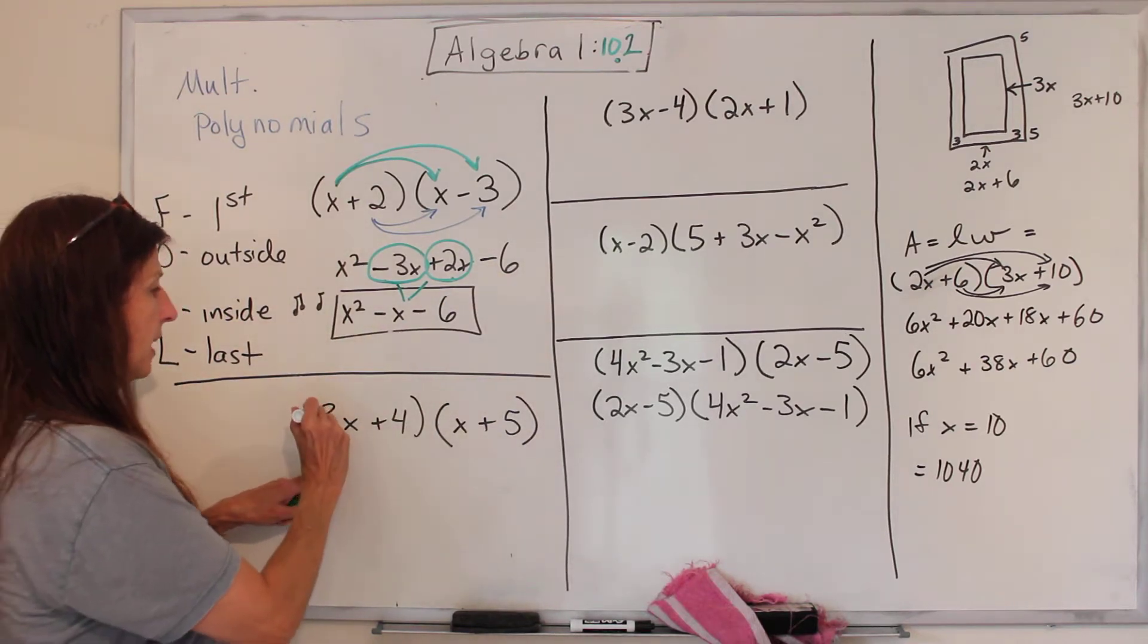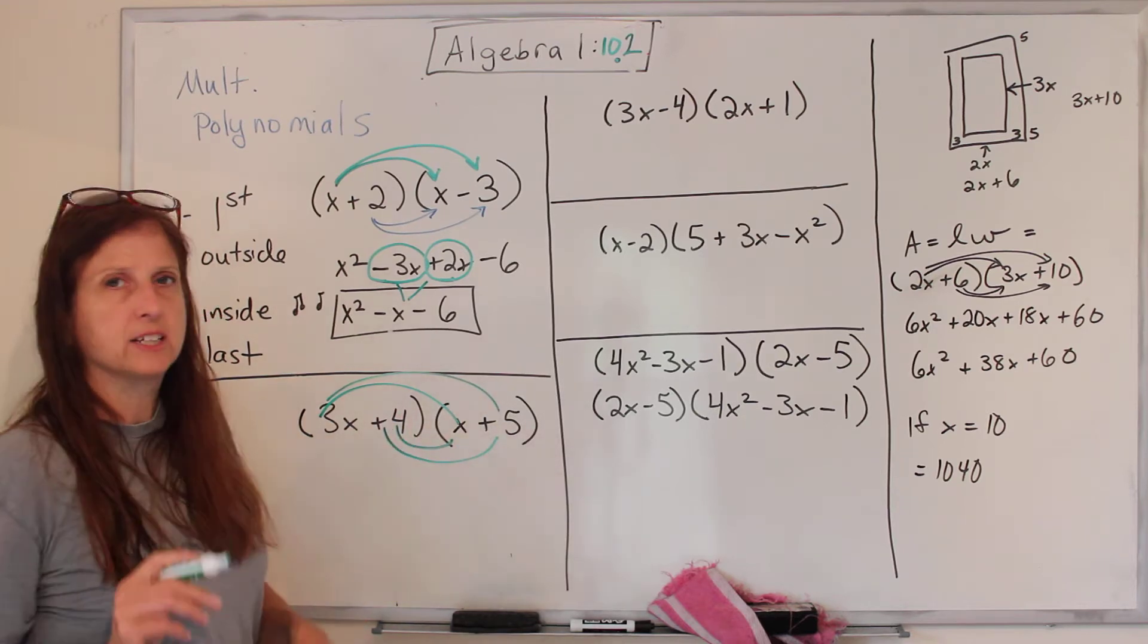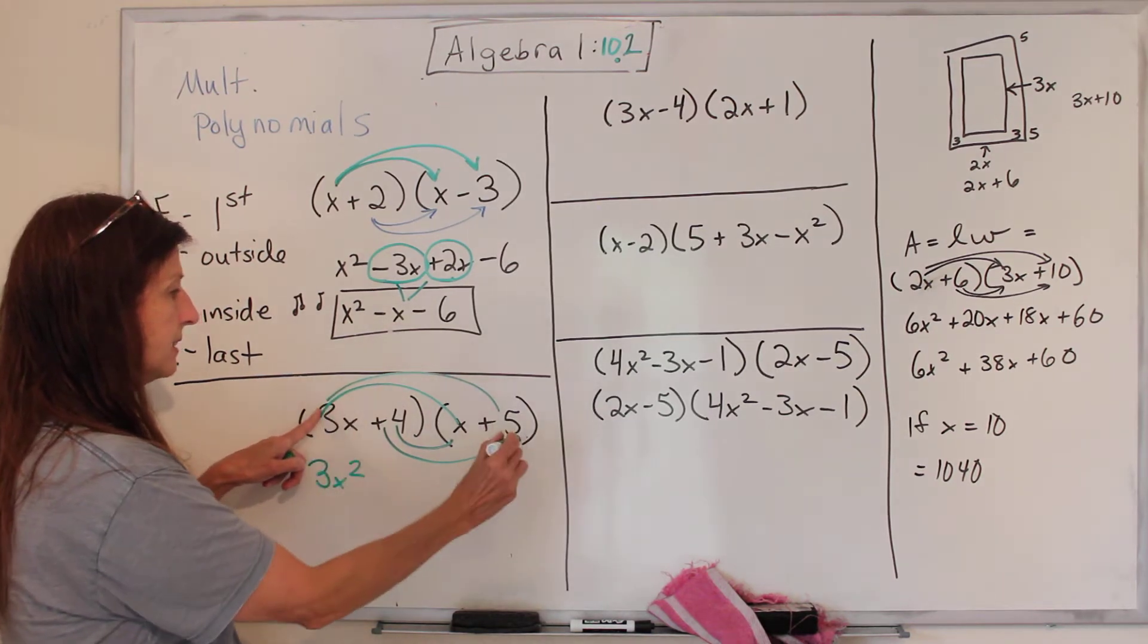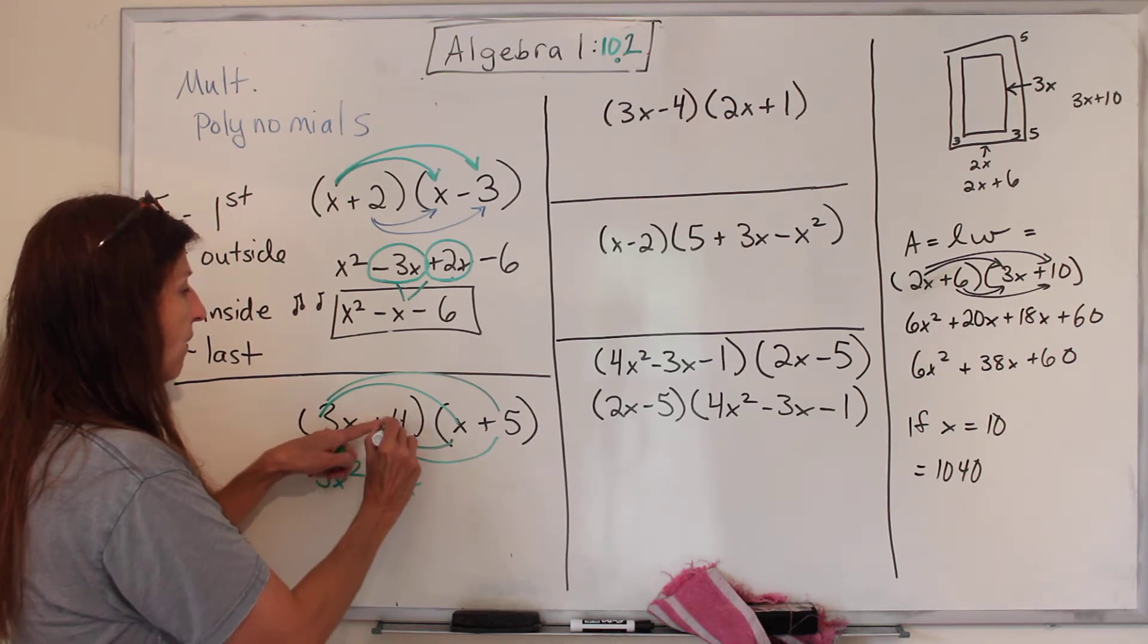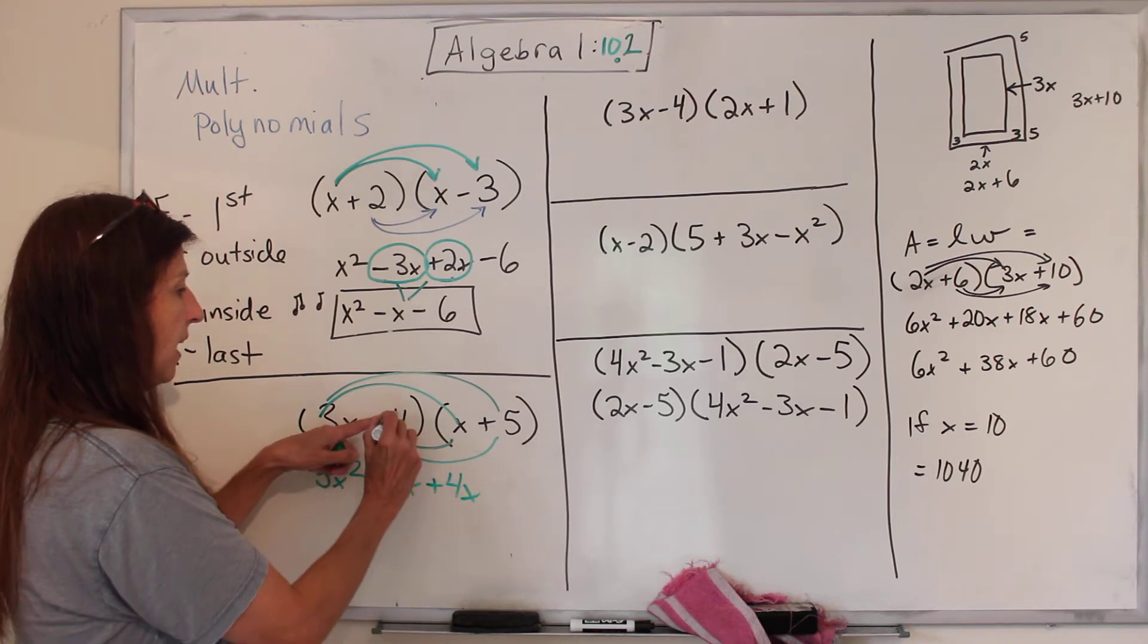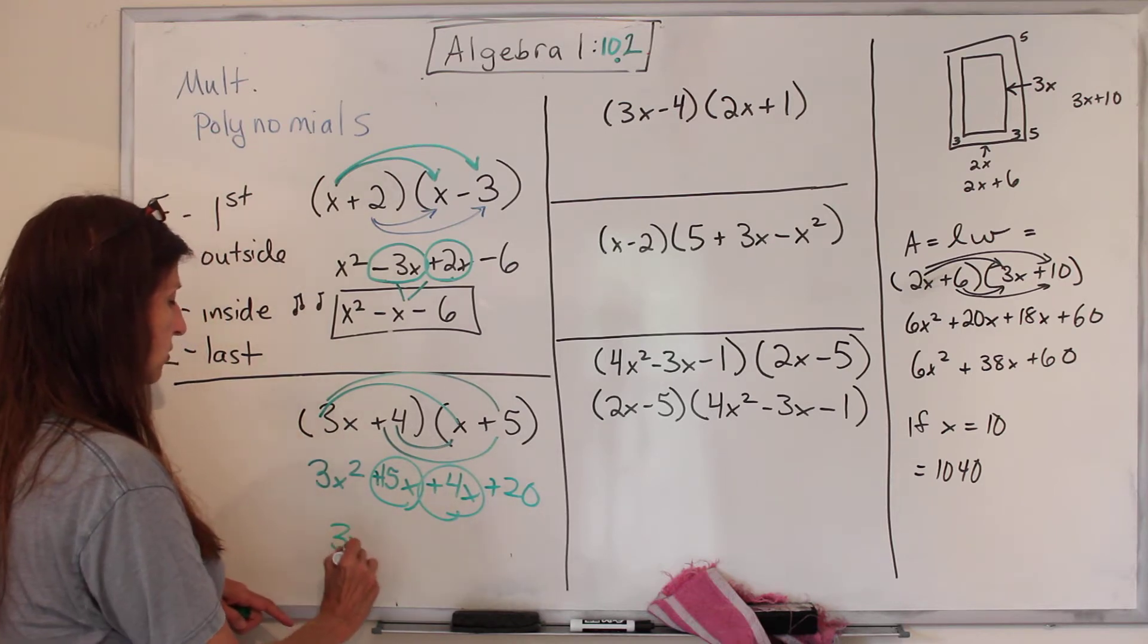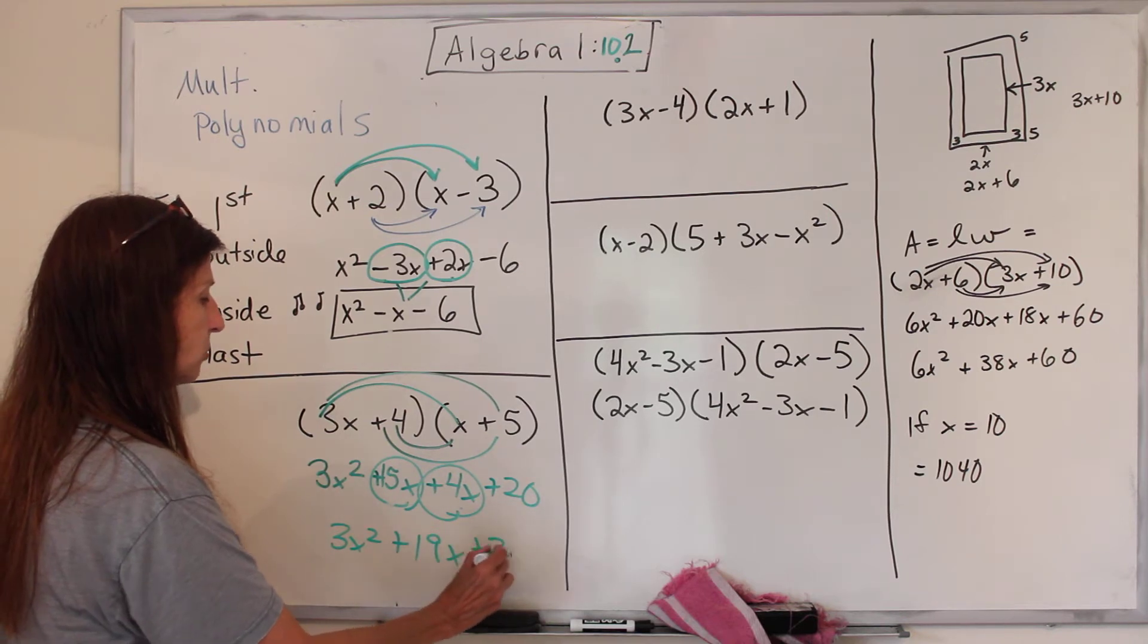Let's do another one. So first, I draw my arrows. I don't always draw arrowheads. I at least draw the lines. 3x times x is 3x squared. 3x times 5 is 15x. 4 times x is 4x, and 4 times 5 is 20. These can be gathered up.